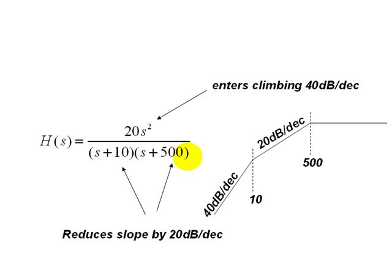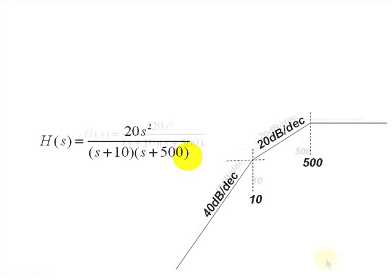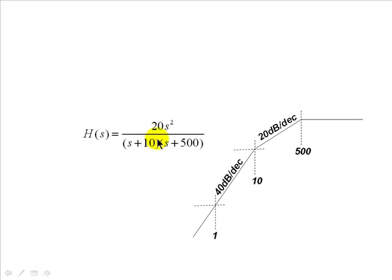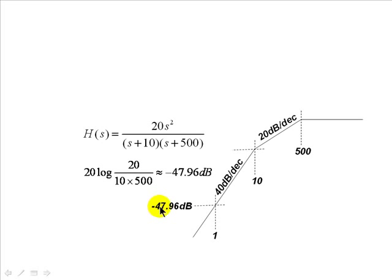We need to fix it on the decibels axis. To do that, we need to determine the value of that curve at omega 1 radians per second. At 1, the contribution of the two zeros at zero will be zero. So we can determine this value as 20 log of 20 divided by 10 divided by 500. That is negative 48 decibels — approximately, that is the value of the curve at omega 1.